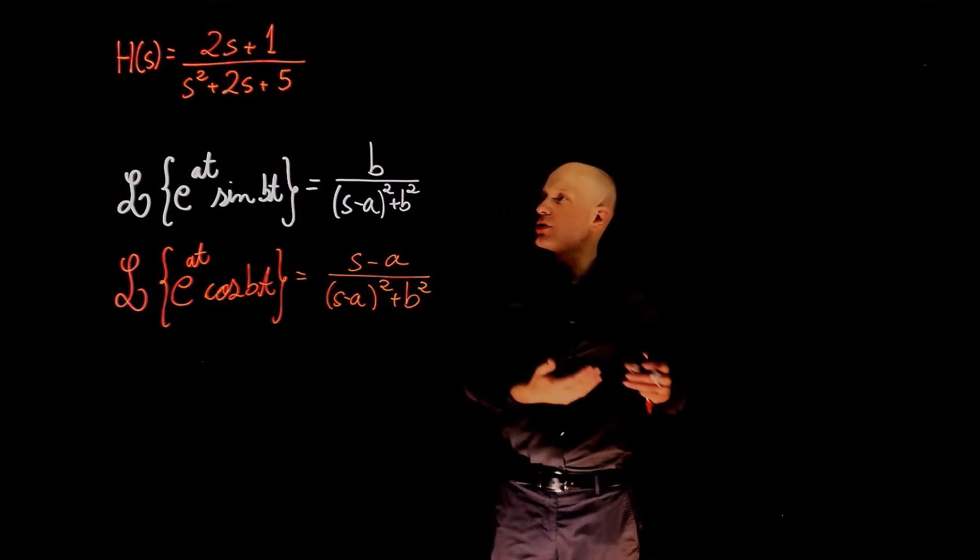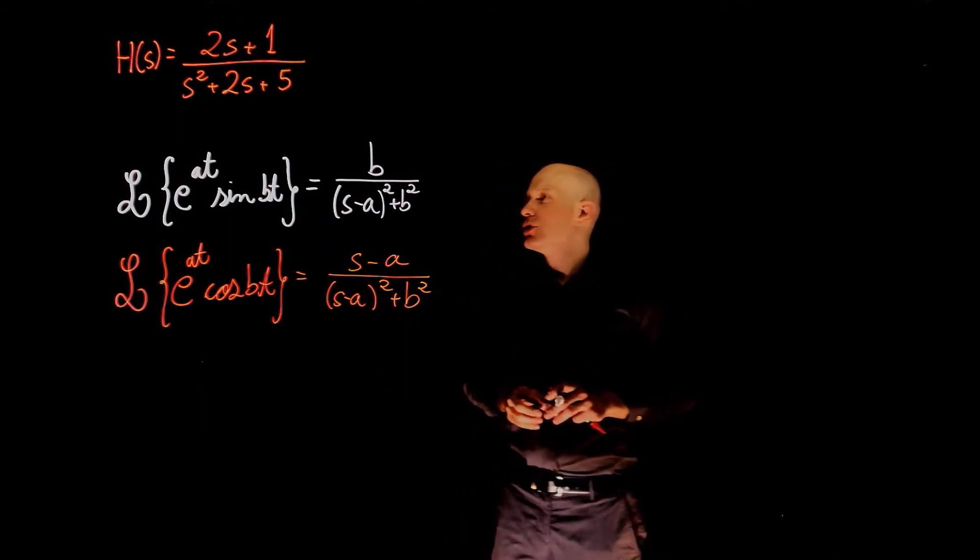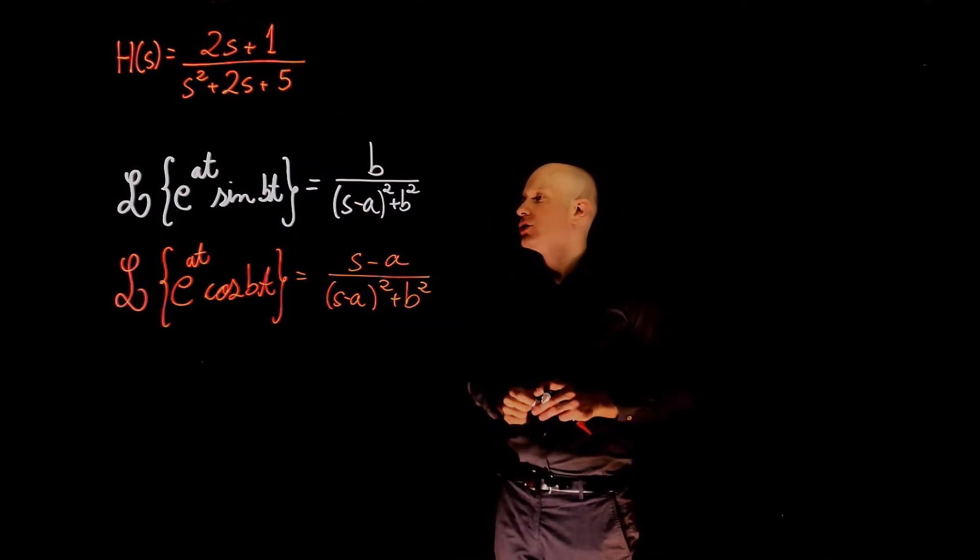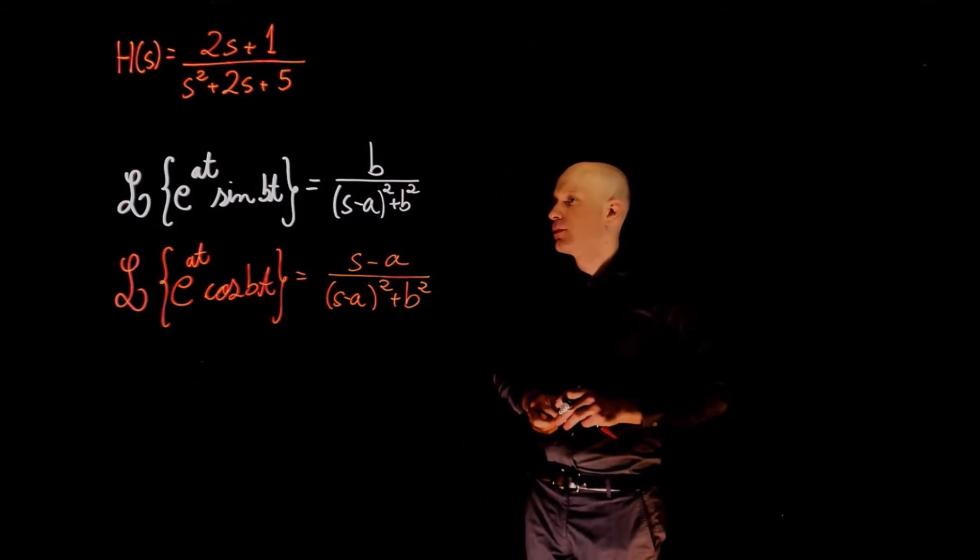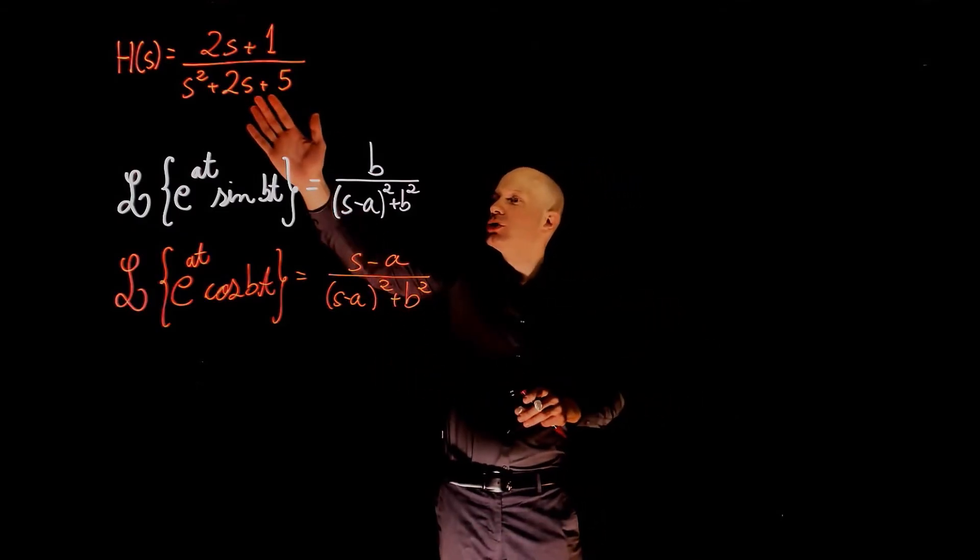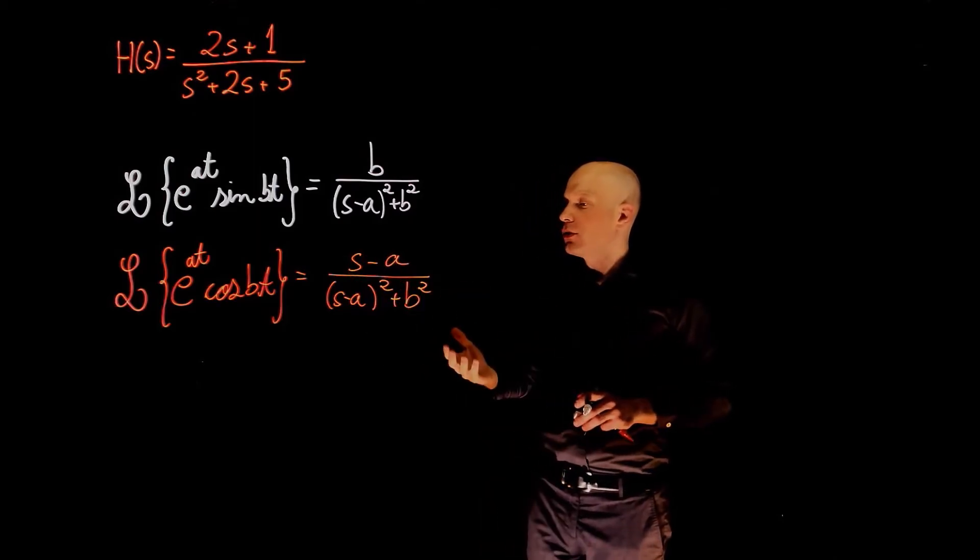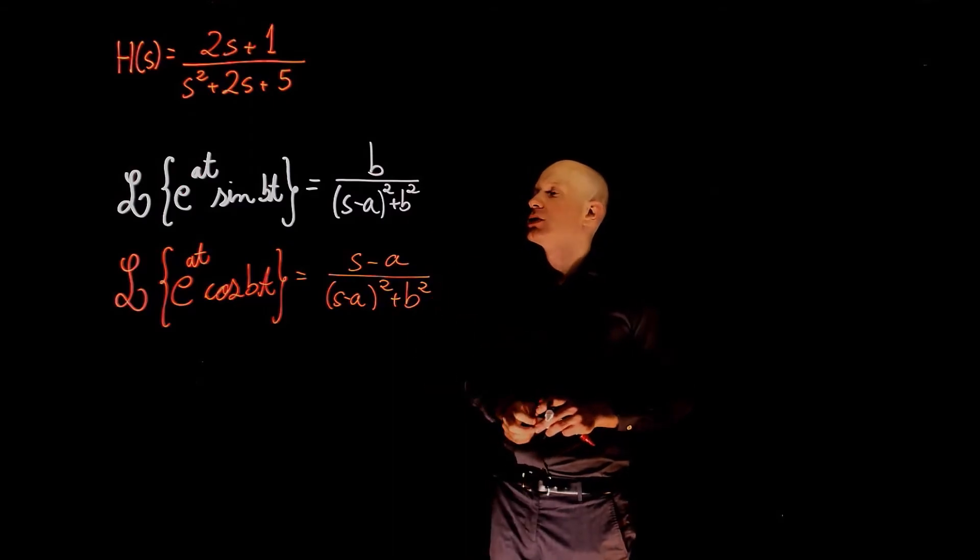This means that we need to work with the denominator as it is. And again, knowing that we have both sinusoidal and exponential components, these two functions here are the ones that this specific transfer function will fall into. We see both the exponential and the sinusoidal component. We now need to rearrange this equation in one of these forms. We see that both forms have this term s minus a squared plus a constant squared.